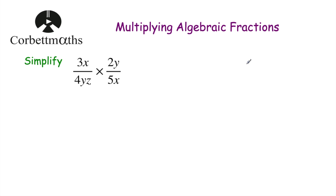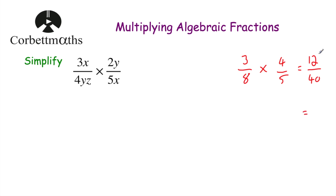One thing I want to mention is that if you have three-eighths multiplied by four-fifths, if we were to multiply these fractions together we could do three times four is equal to twelve and eight times five is equal to forty, and then we could cancel that down because both the numerator and denominator are divisible by four. Twelve divided by four is equal to three and forty divided by four is equal to ten. So three-eighths multiplied by four-fifths is equal to three-tenths. Now rather than multiplying and then cancelling down, we could cancel down before we multiply because we know that we're going to do three times four and eight times five.